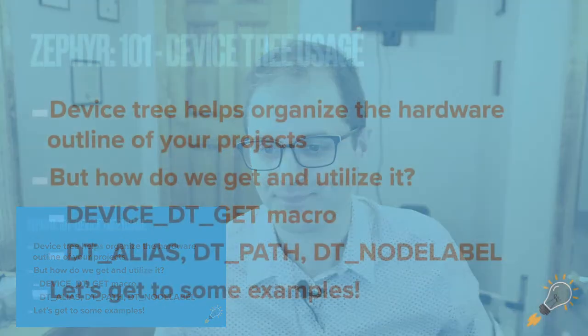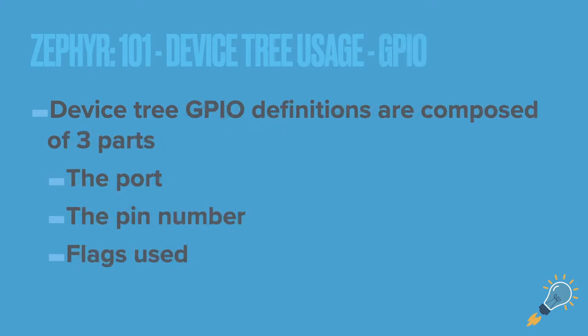Some important macros used include `DT_ALIAS`, `DT_PATH`, and `DT_NODE_LABEL` — all very handy and important in their own way, so we'll touch on each of them. The device tree GPIO definitions are composed of three parts, so we're going to start with GPIOs.